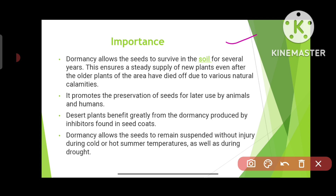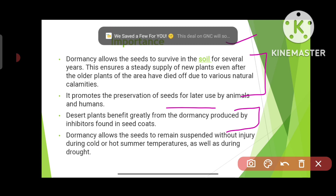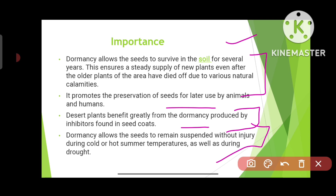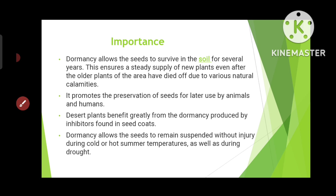Finally, the importance of seed dormancy: dormancy allows seeds to survive in the soil for several years, ensuring a steady supply of new plants even after older plants die due to natural calamities. It promotes preservation of seeds for later use by animals and humans. Desert plants benefit greatly from seed coat dormancy, as it allows seeds to remain suspended without injury during cold, hot summer temperatures, or drought — helping them adapt better to the environment after dormancy ends.